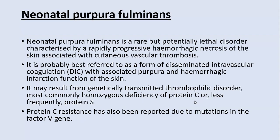Neonatal purpura fulminans is a rare but potentially lethal disorder characterized by rapidly progressive hemorrhagic necrosis of the skin associated with cutaneous vascular thrombosis. It is best regarded as a form of DIC — disseminated intravascular coagulation — with associated purpura and hemorrhagic infarction in the skin.